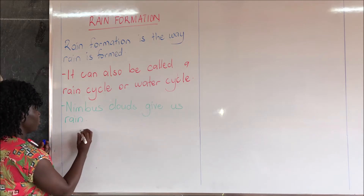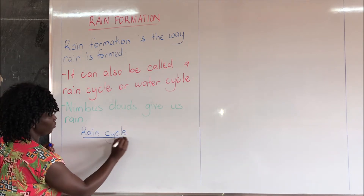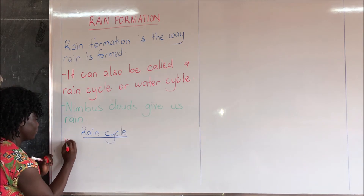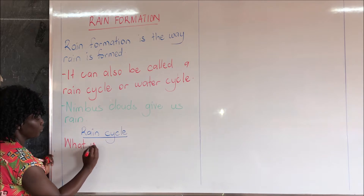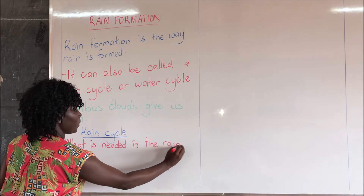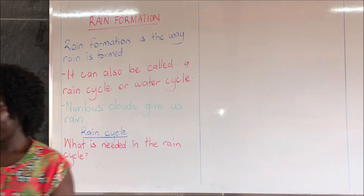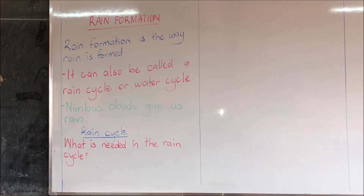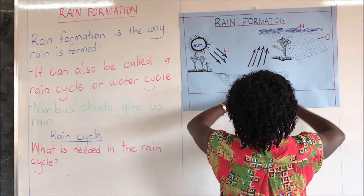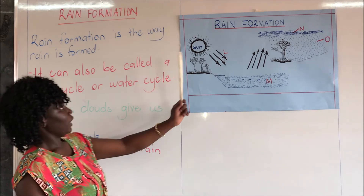Now we look at the rain cycle, which you can also call the water cycle or the process of rain formation. We look at what is needed in the rain cycle. Now we have this chart here. What is needed in the rain cycle — have a look at this one.